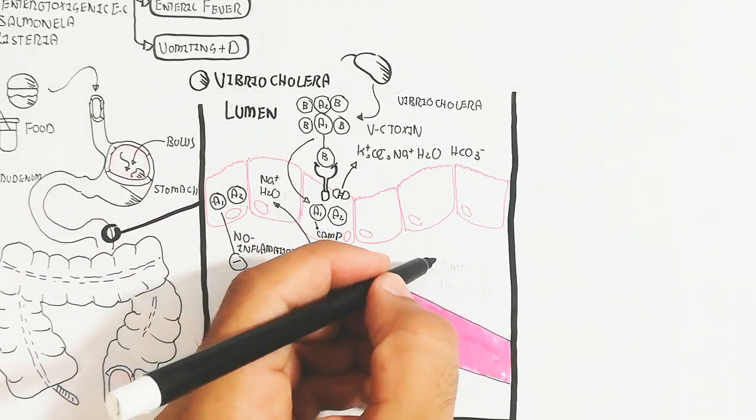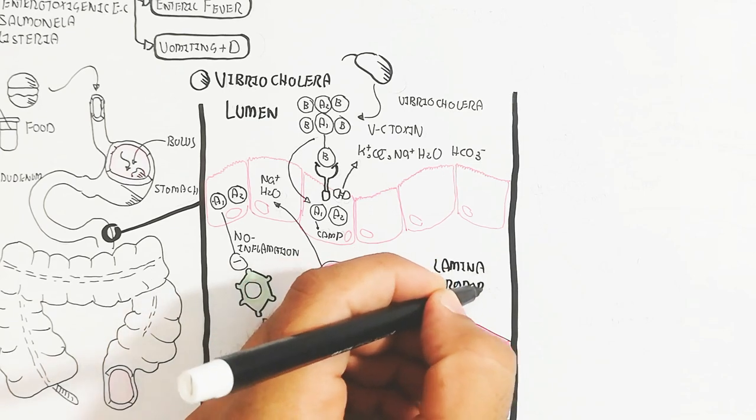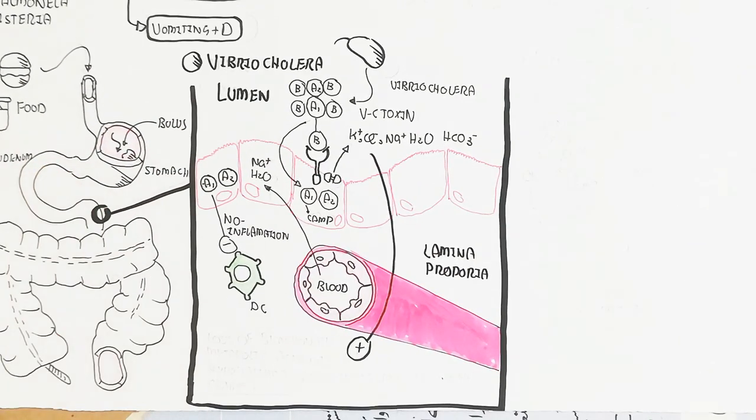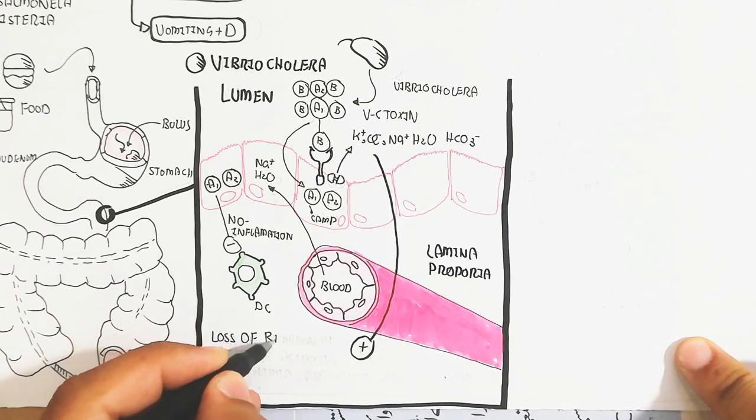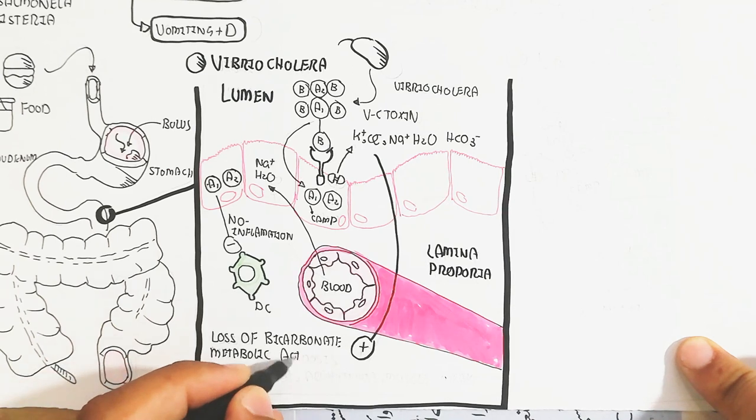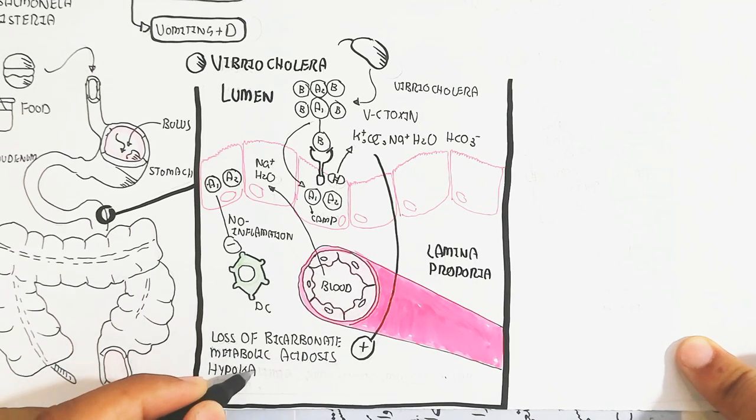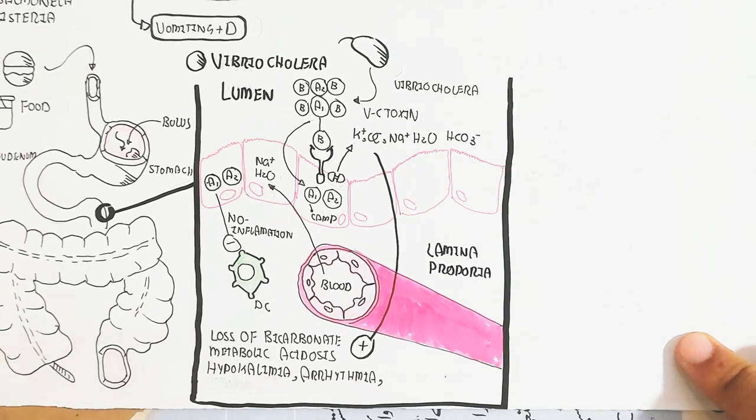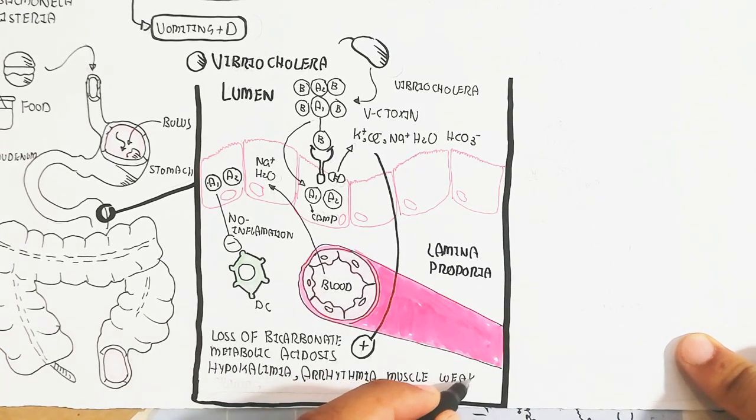On the other hand, there is no inflammation due to inhibition of the dendritic cell. The loss of potassium, sodium, chloride, water, and bicarbonate leads to metabolic acidosis from bicarbonate loss, while hypokalemia causes arrhythmia, muscle weakness, and cramping.